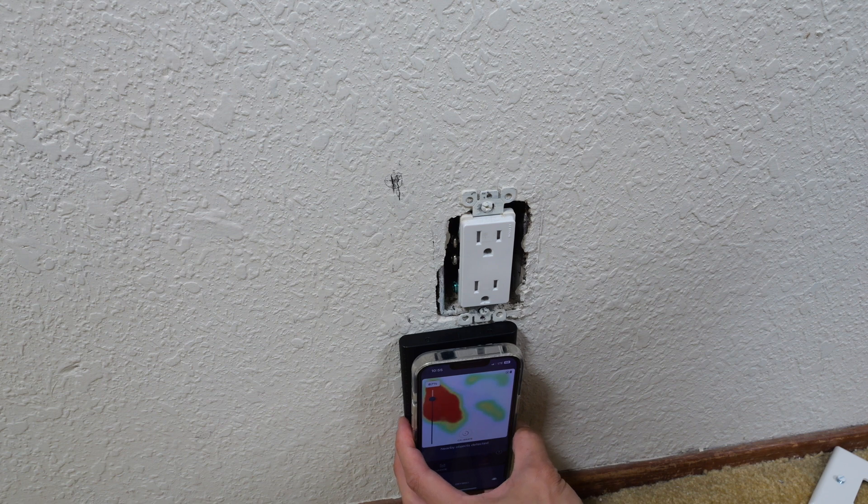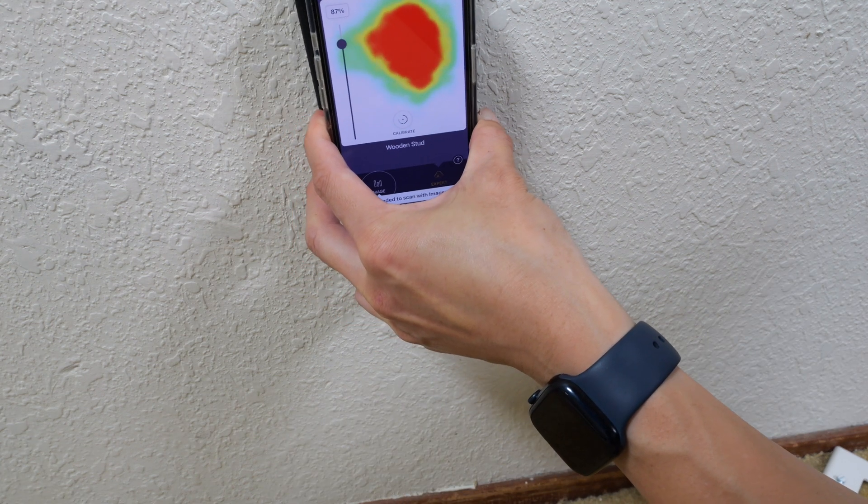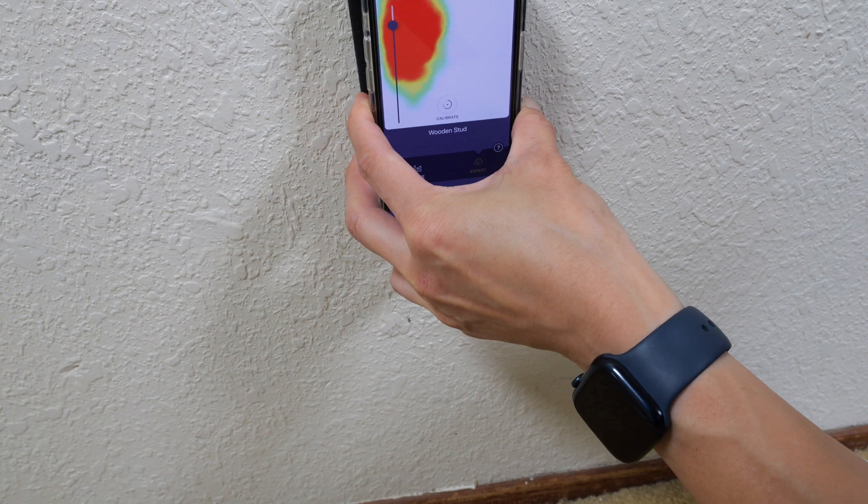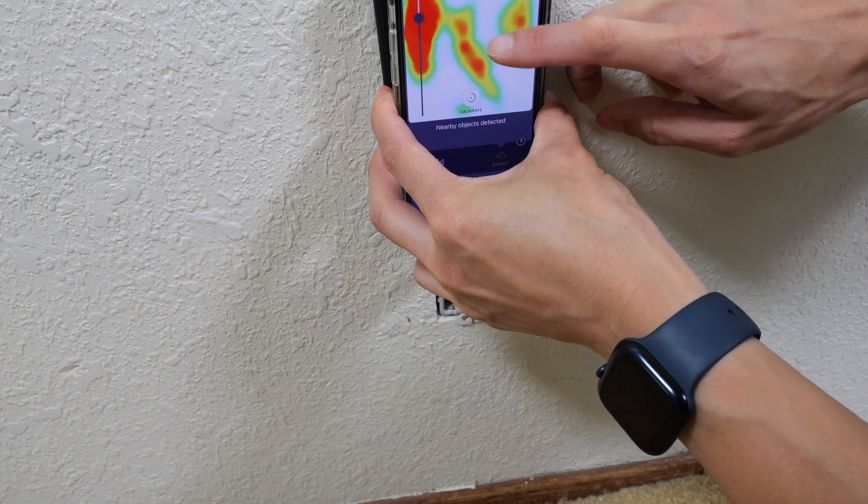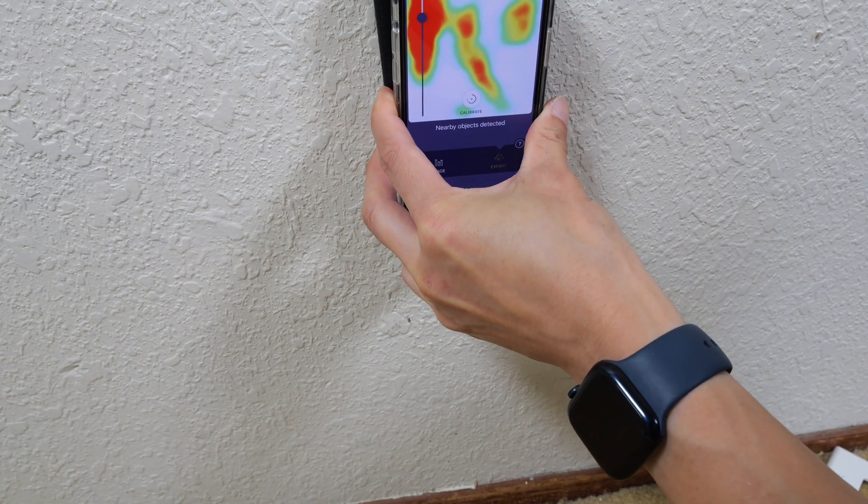Use the expert mode just to take a look at things. Certainly something behind there. That would be the stud right there in that big blob. And then there's something right here that looks like it might be the wire.